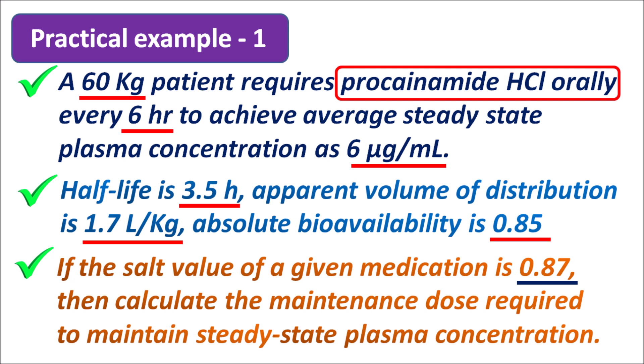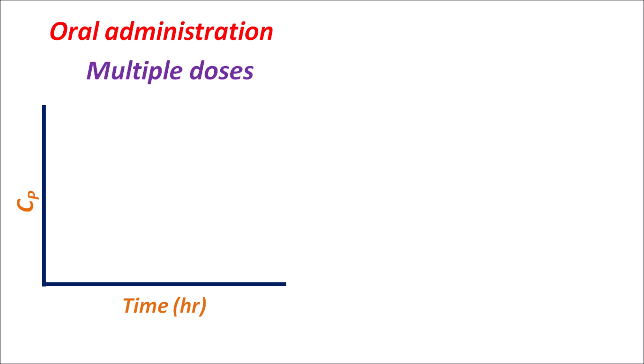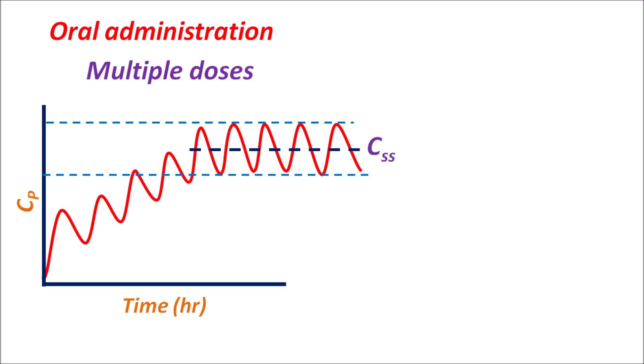Now let us see the solution. The drug is given by oral administration and as multiple doses in order to achieve steady state plasma concentration. We can plot a graph with y-axis as plasma concentration and x-axis as time. Since the drug is given orally, the drug concentration slowly rises and after multiple doses it achieves a steady state plasma concentration, where maximum and minimum concentrations are observed. The average of this maximum and minimum concentration is considered as CSS, the average steady state plasma concentration.